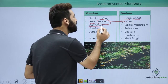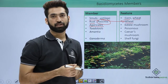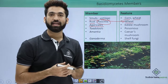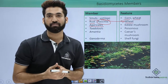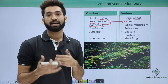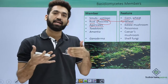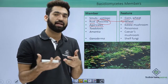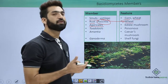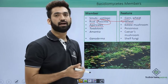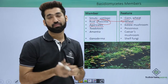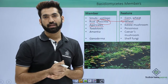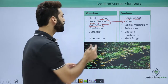Agaricales are the edible mushrooms. The mushrooms we eat are Agaricus bisporus or Agaricus campestris — both belong to Agaricales. However, it is important to remember that mushrooms are not always edible; there are poisonous mushrooms as well.